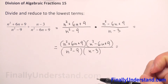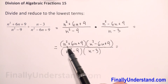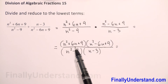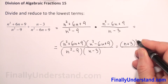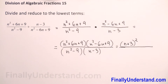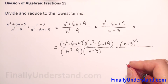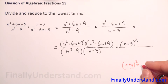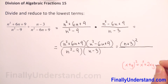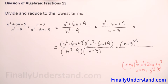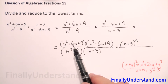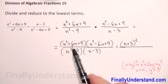Looking at the first parenthesis, n squared plus 6n plus 9 is a perfect square trinomial. Using the formula: x plus y to the second power equals x squared plus 2xy plus y squared, with x equal to n and y equal to 3, we get 3 squared is 9 and 2 times n times 3 gives 6n. So this rewrites as n plus 3 to the second power.